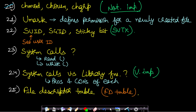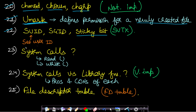The twentieth topic — chmod, chown, and chgrp — these are all commands and not very important; you can read them after completing the other topics. The twenty-first topic is umask, which defines the permission for a newly created file — if you change the umask value then the permissions for further newly created files will change. Other important topics include SUID, SGID (set user ID and set group ID), and the sticky bit — just read a couple of lines about these topics.